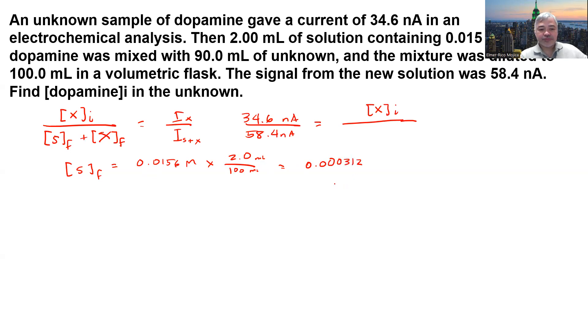Now for the final concentration of the analyte: we have Xi multiplied by 90 mL over 100 mL, which gives us 0.9 Xi.